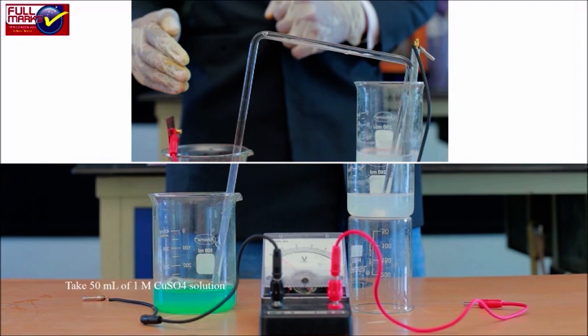Construction of Cell: Clean the electrodes and connecting wires with sandpaper before use. Take 50 ml of 1M ZnSO4 solution in a beaker and dip the zinc strip in it. Connect positive terminal of voltmeter with copper strip and negative terminal with zinc strip.